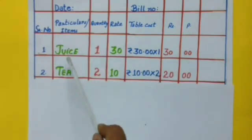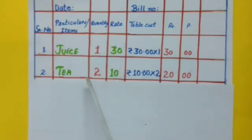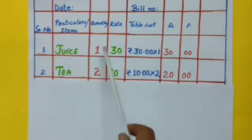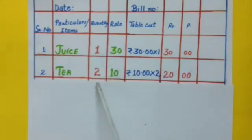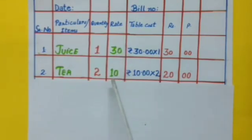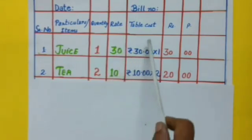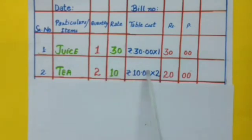Serial number 2, name of the item: tea. How many cups of tea were ordered, dear children? 2 cups of tea were ordered. So under the quantity we will write 2, rate per cup of tea is 10 rupees. So total cost: 10 into 2 is 20 rupees.